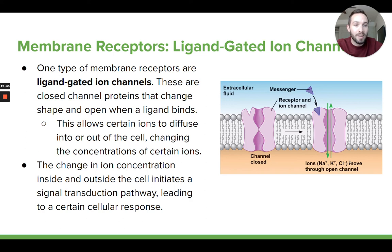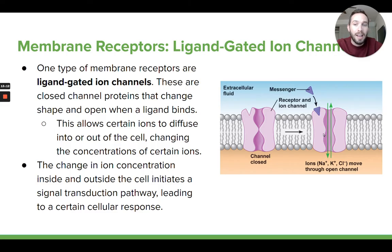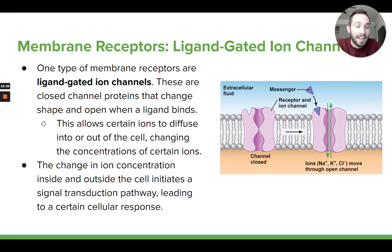Ions can go in and out of these channels, but only when they're open. These are a special type of ion channel where they are actually closed and only open when they bind to the signaling molecule. Here's the ligand — it binds to this ion channel that's closed, and by binding to it, it allows the protein to change shape in a way that it's now open, which can then allow certain ions to diffuse in or out of the cell. That's going to change the concentration of ions inside or outside the cell.